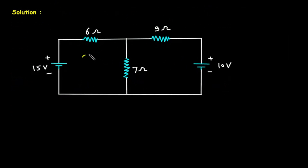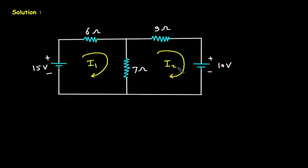Let's assume this is mesh number 1 with current I1, and this is mesh number 2 with current I2.